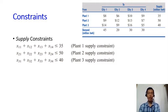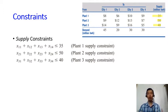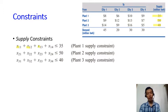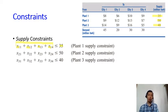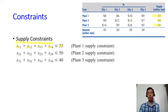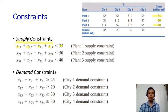From the problem we see supply constraints, because each plant can only produce a limited amount — plant 1: 35 million kilowatt-hours, plant 2: 50, plant 3: 40. Whatever you send out from plant 1 — x_11, x_12, x_13, and x_14 — must be less than or equal to its capacity. The same applies for plants 2 and 3.